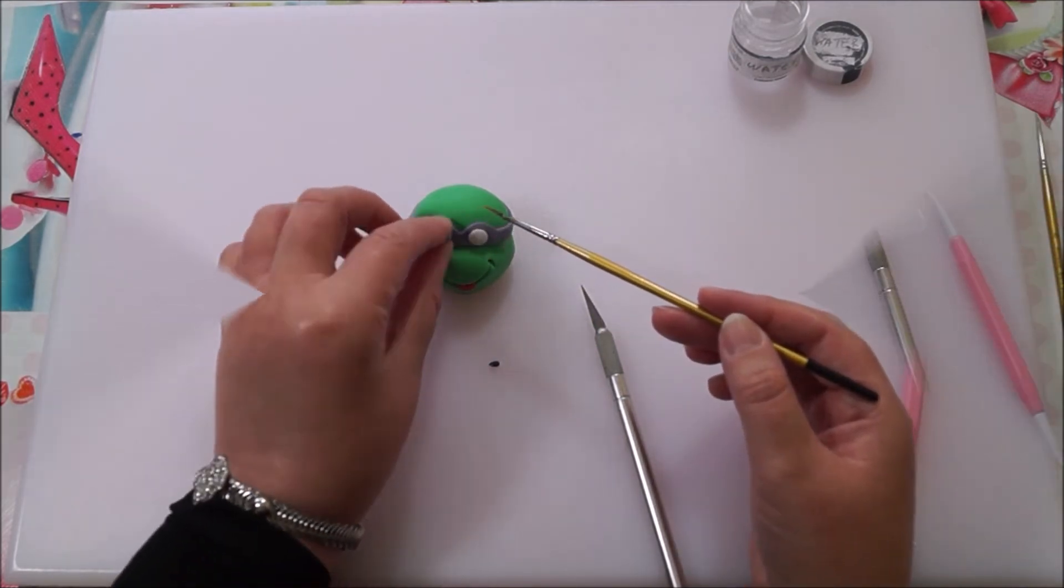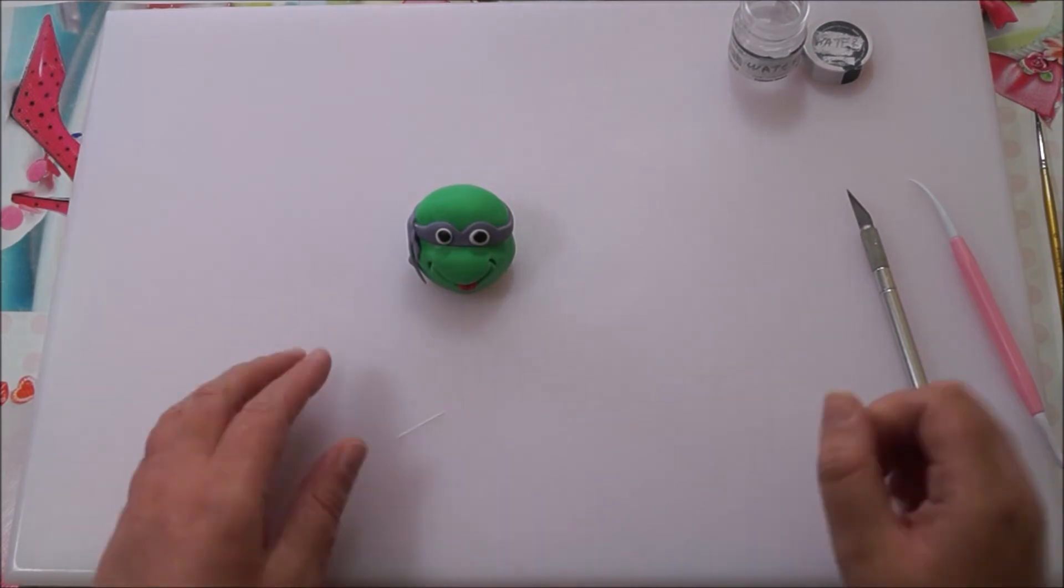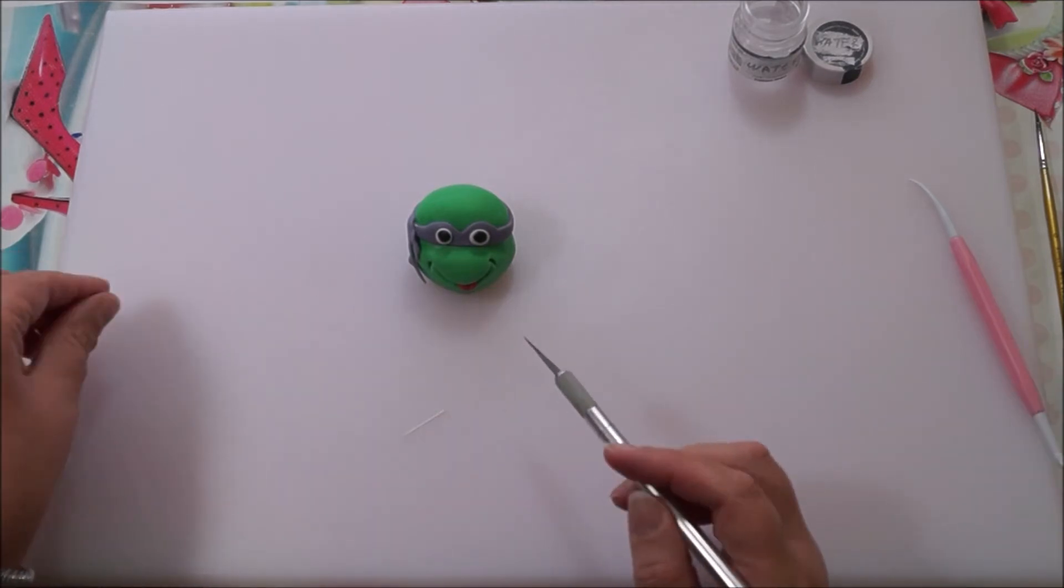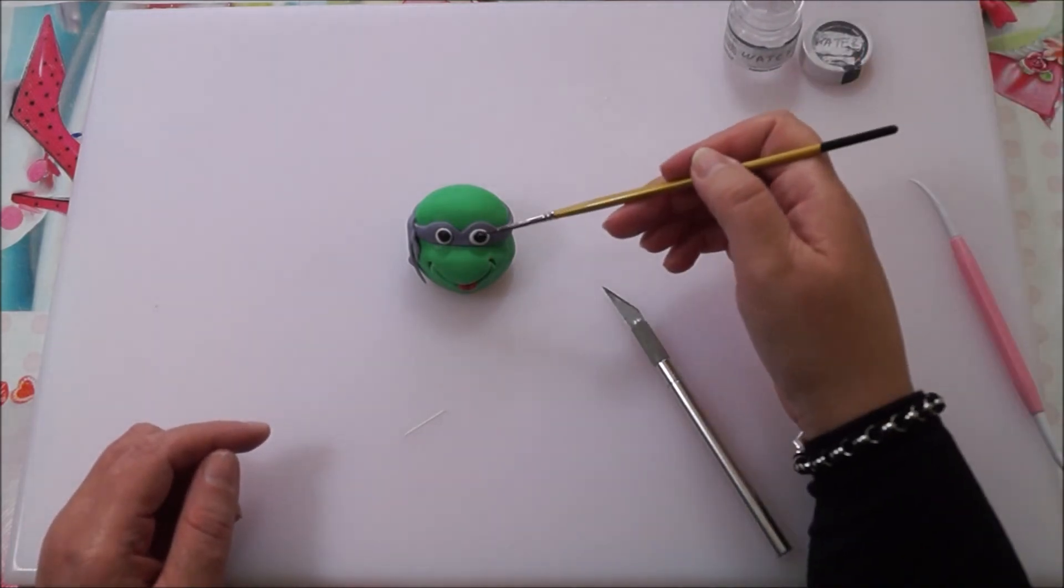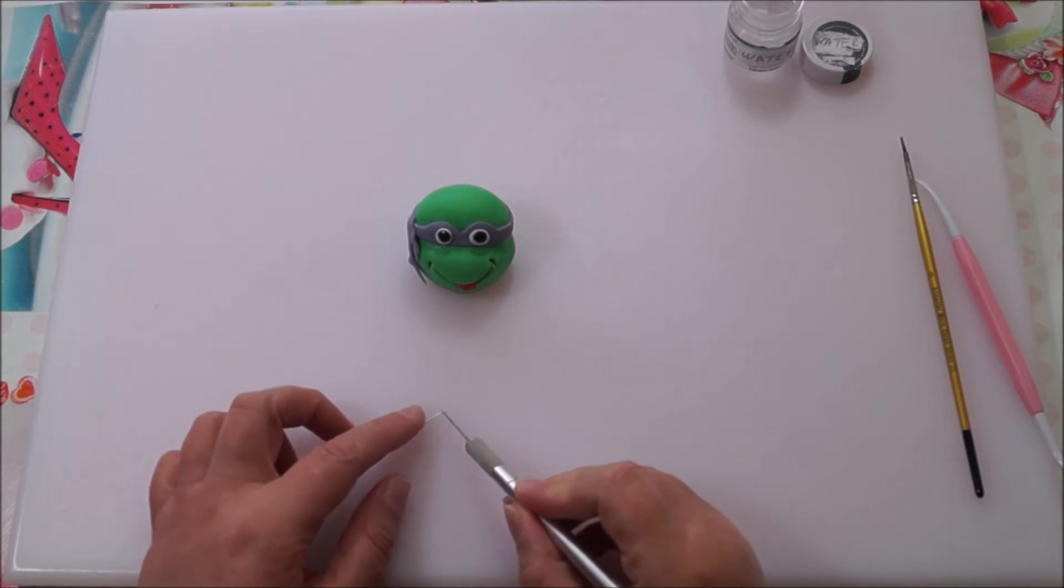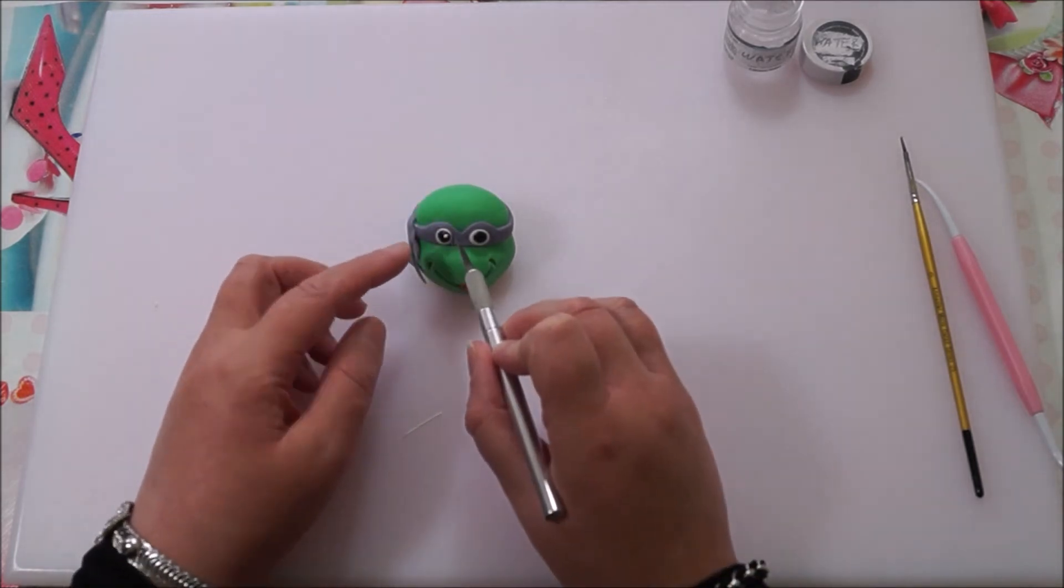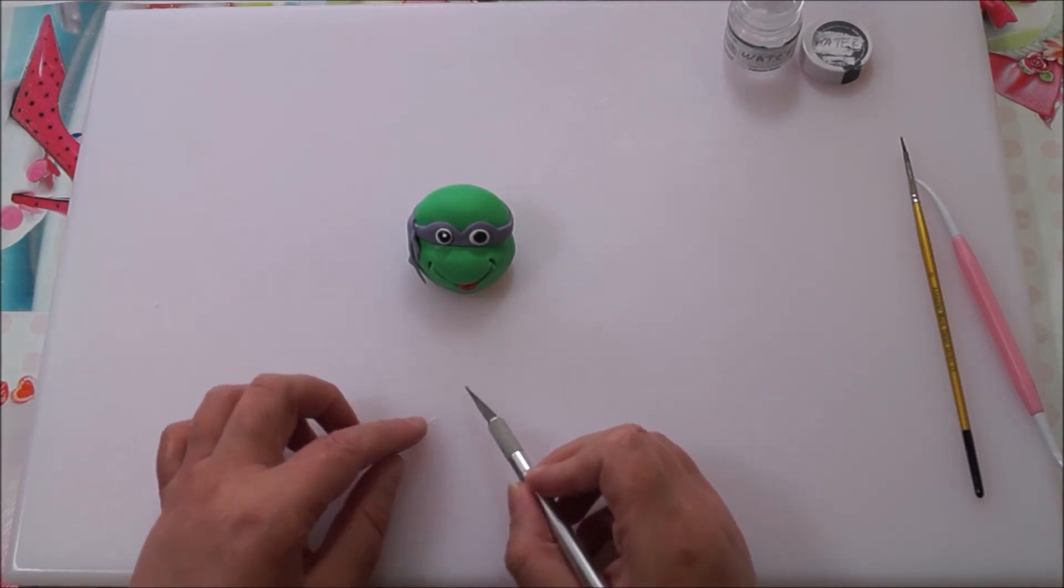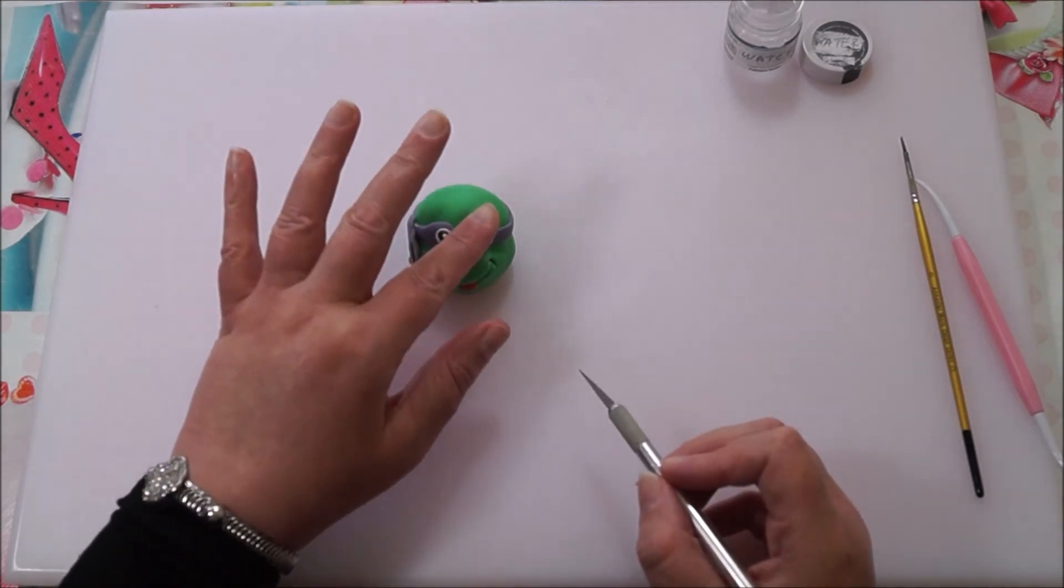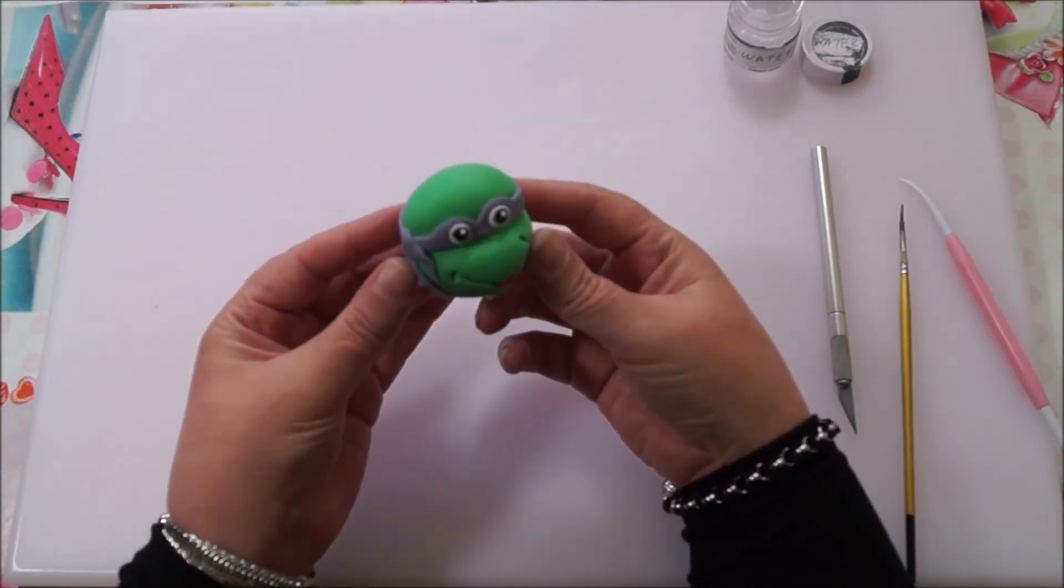Take a piece of white fondant and roll it into a very thin strip. Put a little bit of water on the black of the eyes, cut off a very tiny piece of white and stick it in the eyes. This will finish off the eyes nicely, and it should be looking something like this.